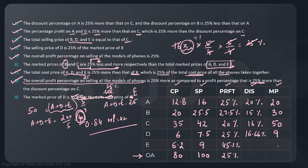We can now calculate the marked price of A as well. Total marked price of ADE is 40. Marked price of A + D + E = 40. 20 + 9 = 29, so marked price of A = 11. On 11, selling price is 9, so discount = 2, which is 18.18% of 11. Total marked price of all phones = 120, and overall discount = 20 on 120 = 16.66%.